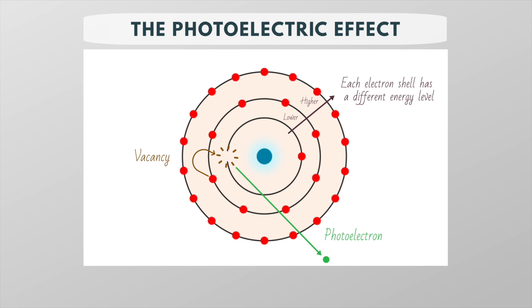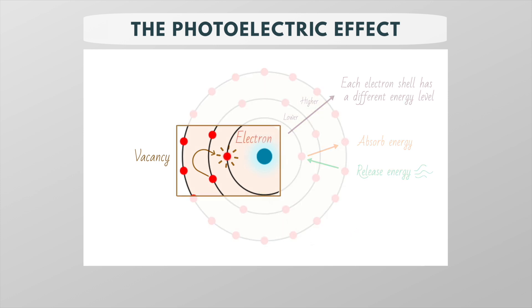In order to move between shells, an electron must absorb or release an amount of energy. This is why if an electron drops down to a lower energy shell, it will release energy in the form of x-rays. This is also known as characteristic radiation.